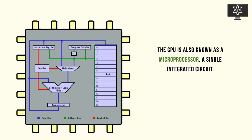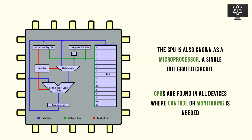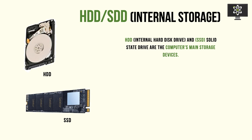CPUs are found in all devices, mainly for control and monitoring purposes. Whatever thing that has control - meaning it can dictate the output of another device - or needs to monitor and gather input, requires a CPU. Internal storage nowadays is typically HDDs and SSDs. HDDs, or hard disk drives, and SSDs, solid-state drives, are the computer's main storage devices capable of storing a huge amount of data, especially compared to any type of RAM.